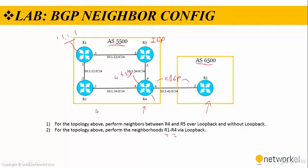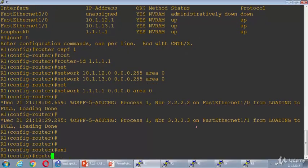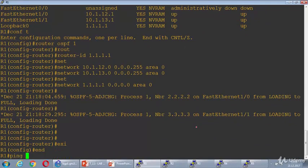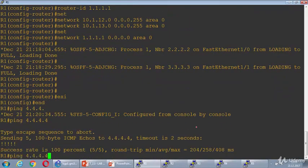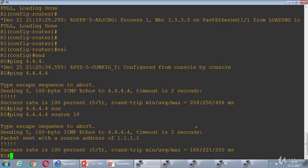I've finished my OSPF configuration in the autonomous system. Now let's start with the second step. We need to perform a neighborhood between Router 1 and Router 4 via their loopbacks. Let's go to Router 1. I'll try the ping first — I can reach the loopback of Router 4 via the IGP I configured. OSPF is carrying me.